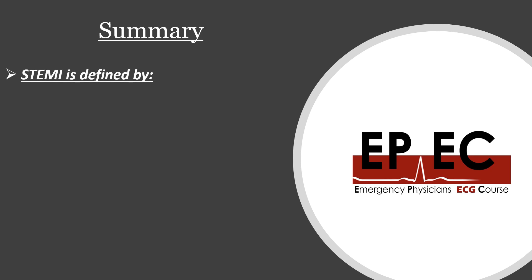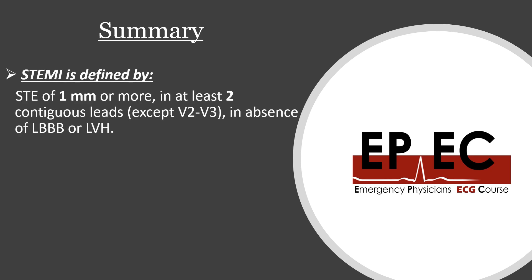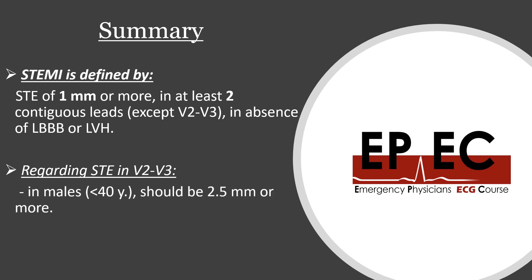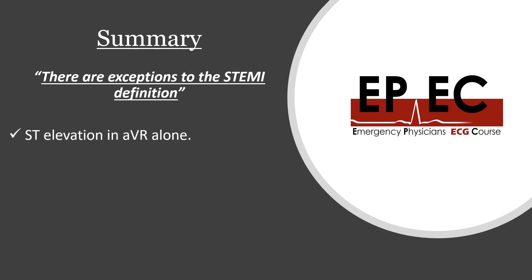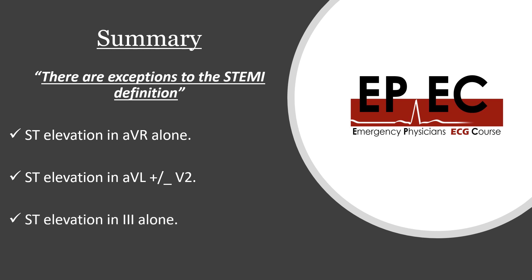In summary: the STEMI definition requires ST elevation of 1 mm or more in two contiguous leads anywhere in the ECG except V2 and V3, in the absence of LBBB or LVH. For V2 and V3: 2.5 mm or more in males under 40, 2 mm or more in males over 40, and 1.5 mm or more in females regardless of age. Exceptions to the two-contiguous-lead rule: ST elevation in AVR alone is bad; ST elevation in AVL plus or minus V2 is bad; ST elevation in lead 3 alone is bad — as long as the clinical presentation is consistent with MI.